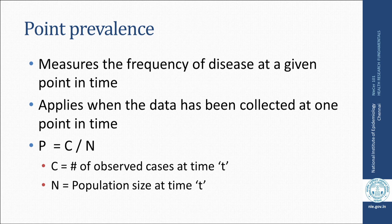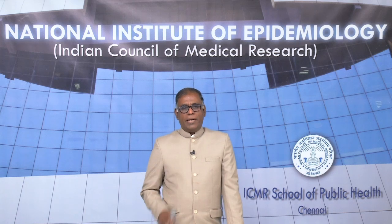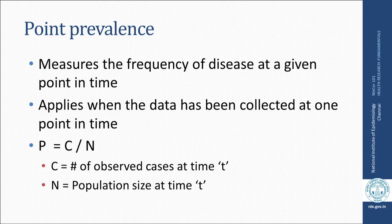Prevalence is broadly classified into two categories: point prevalence and period prevalence. Point prevalence measures the frequency of disease at a given point in time — it is like a snapshot. This applies when data has been collected at one point in time. It is denoted as P = C/N, where C is the number of observed cases at that particular point of time T.